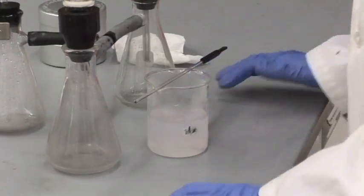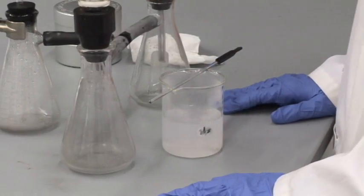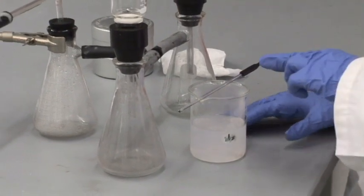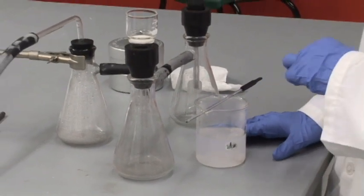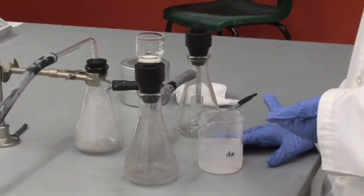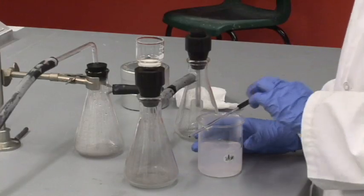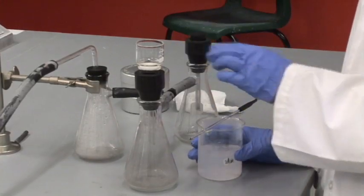The first step is to decant the liquid through the filter. This means you want to get the liquid through the filter but keep most of the precipitate still in the beaker. This is so that it will go a little bit faster if you're filtering just liquid and so that we can rinse the precipitate before transferring it to the filter.